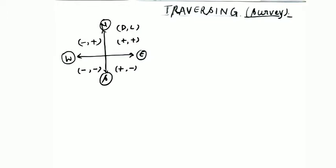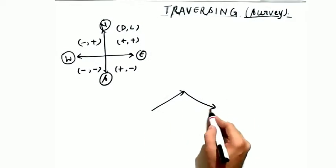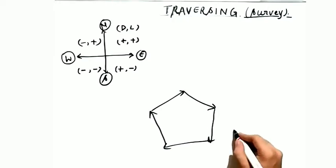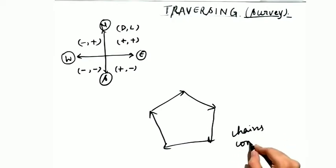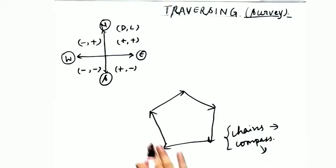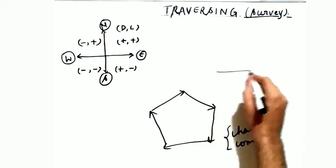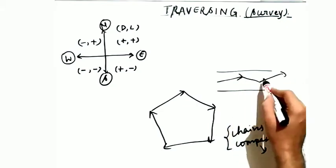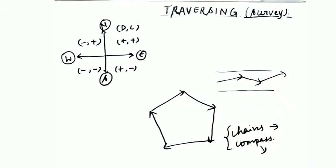So what is traversing? Traversing is when we do survey in a connected fashion — going from one point to another in sequence. We use chains for linear measurements and compass for angular measurements. We can also use theodolites. If the path forms a closed loop, this is a closed traverse. If it goes along a narrow road without closing, it is an open traverse.